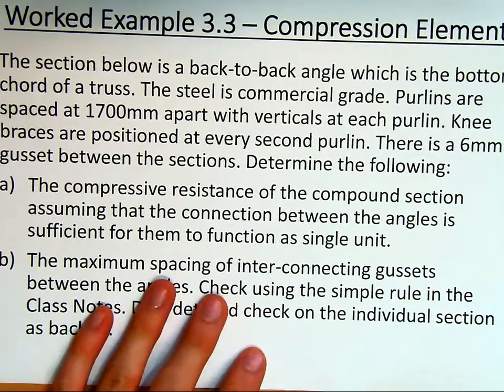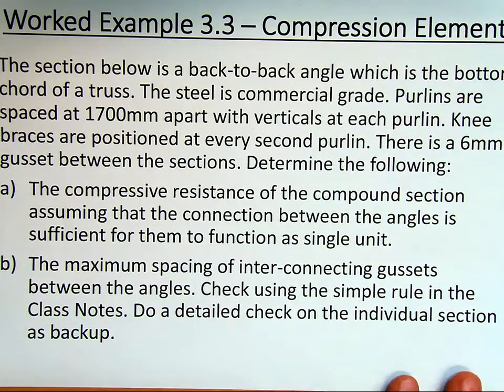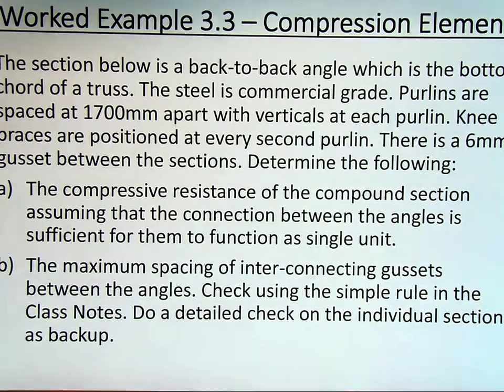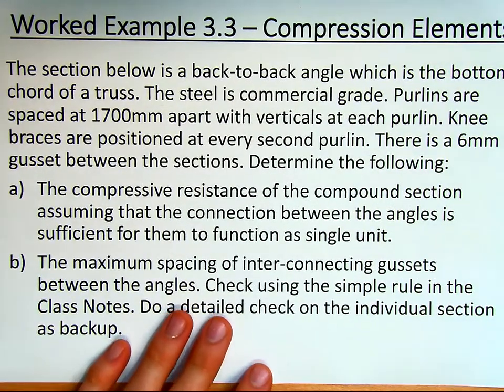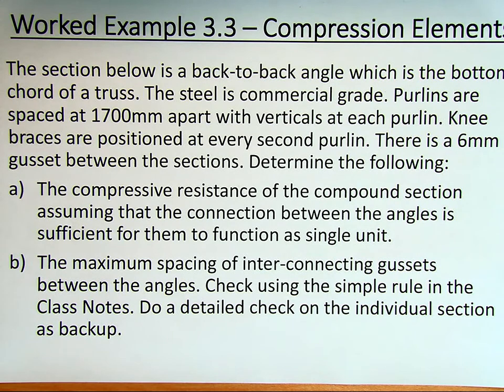We're designing this according to SANS 10162 part 1. The section below is a back-to-back angle which is the bottom chord of a truss. The steel is commercial grade. Purlins are spaced at 1700 millimeters apart with verticals at each purlin. Knee braces are positioned at every second purlin. There's a 6 millimeter gusset between the sections.